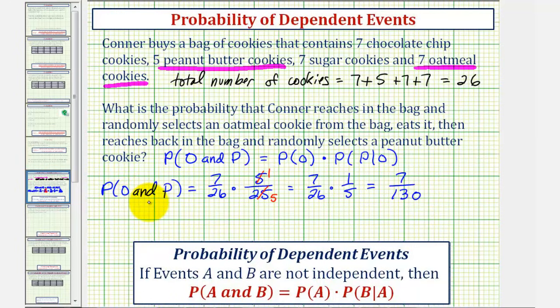So this would be the probability of selecting an oatmeal cookie, eating it, then going back into the bag and selecting a peanut butter cookie.